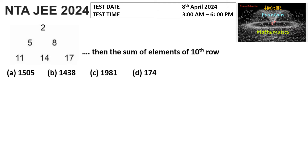Given a pattern with first row 2, second row with 5 and 8, third row with 11, 14, 17, and it continues, we need to find the sum of elements of the 10th row. We can observe that the first row's first element is 2, the second row's first element is 5, and the third row's first element is 11. The difference between these first elements is 3, and after 8 you get 11.